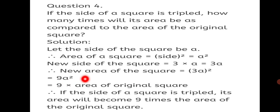A squared is the area of the original square, so the new area equals 9 times the area of the original square. If the side of a square is tripled, its area will become 9 times the area of the original square. This completes Practice Set 45. Do practice the sums well in your book. Stay safe, keep learning, and thank you.